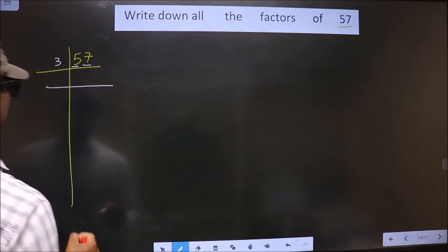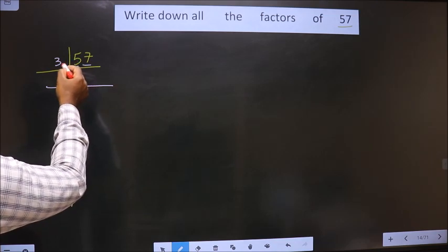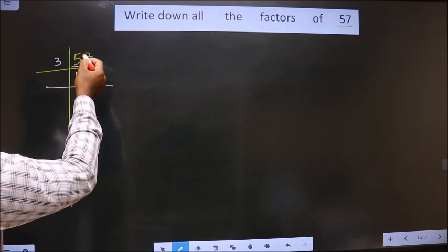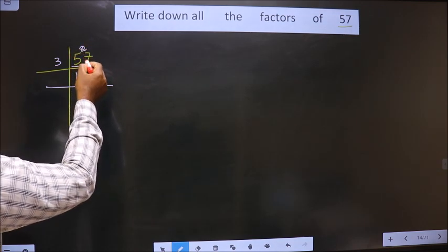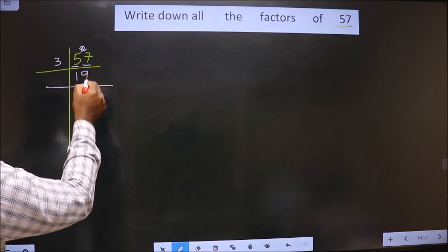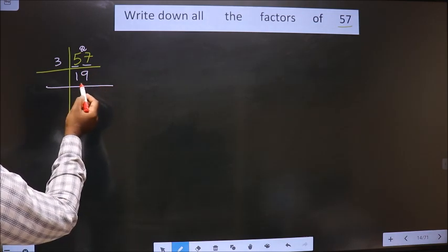Now, first number is 5. A number close to 5 in the 3 table is 3 times 1 equals 3. 5 minus 3 is 2, carried forward making it 27. When do we get 27 in the 3 table? 3 times 9 equals 27.